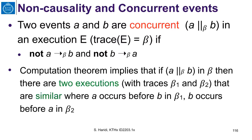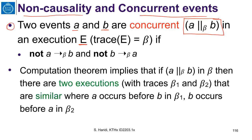Let us look at the notion of non-causality and concurrent events. Two events A and B are concurrent — written with this notation — if in execution with trace beta, A is not before B in beta and B is not before A in beta. So in a sense, they are not comparable by the happen-before relation. We need to remember that the happen-before relation is a partial order, so some events are not comparable.